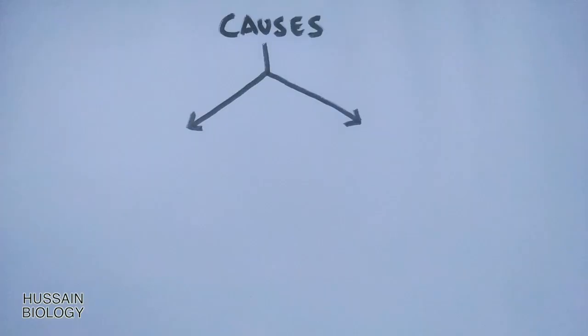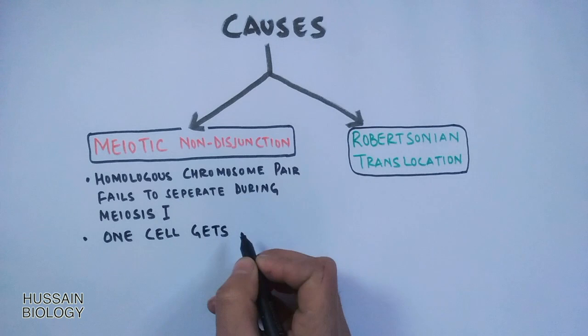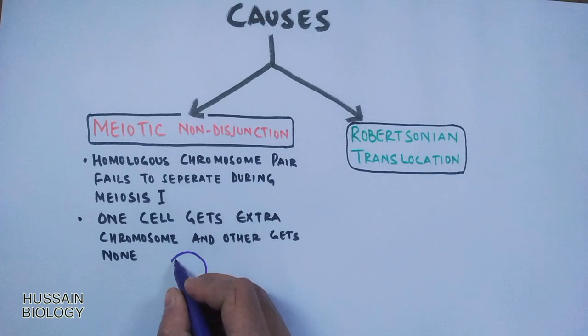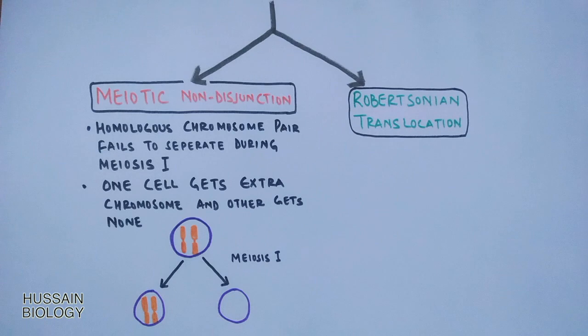Meiotic non-disjunction and Robertsonian translocation are the main causes of Down syndrome. In meiotic non-disjunction, the homologous chromosome pair fails to separate during meiosis I, mostly during maternal meiosis I. In this way one cell gets an extra chromosome and one cell gets none. Due to non-disjunction, the homologous pair fails to separate, so one cell gets both chromosomes and the other cell gets none.